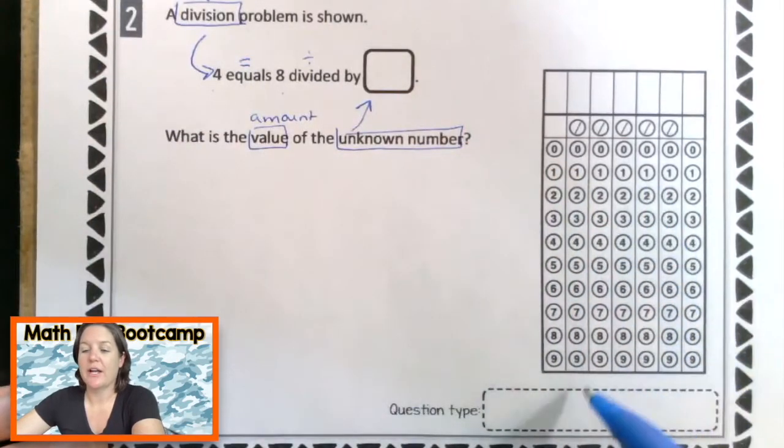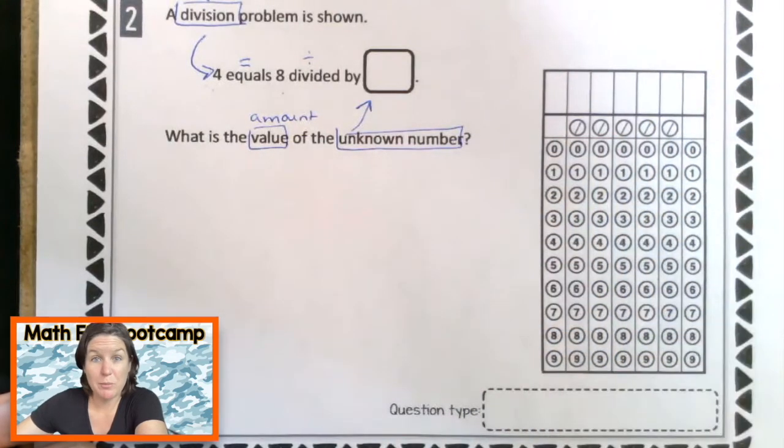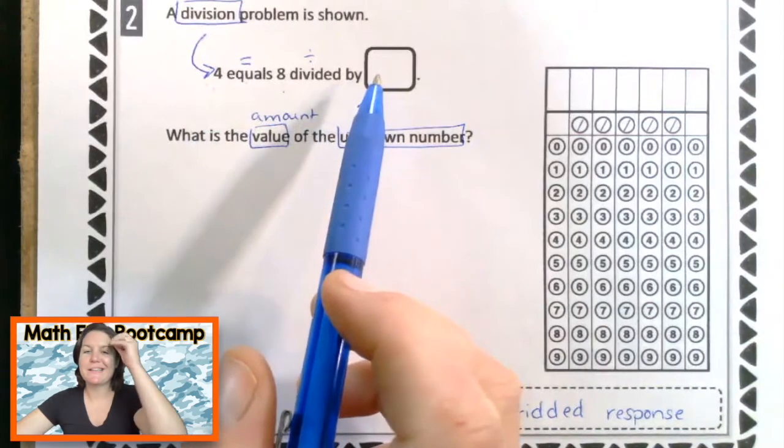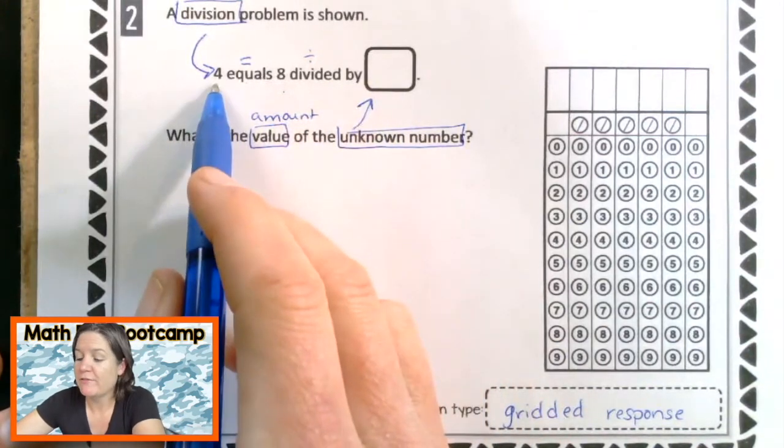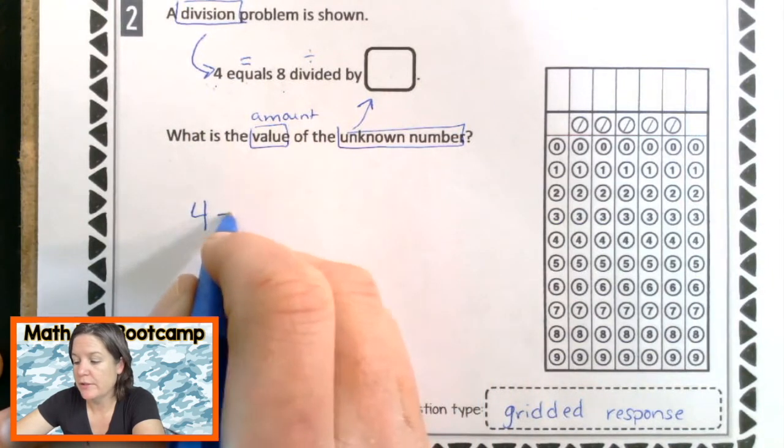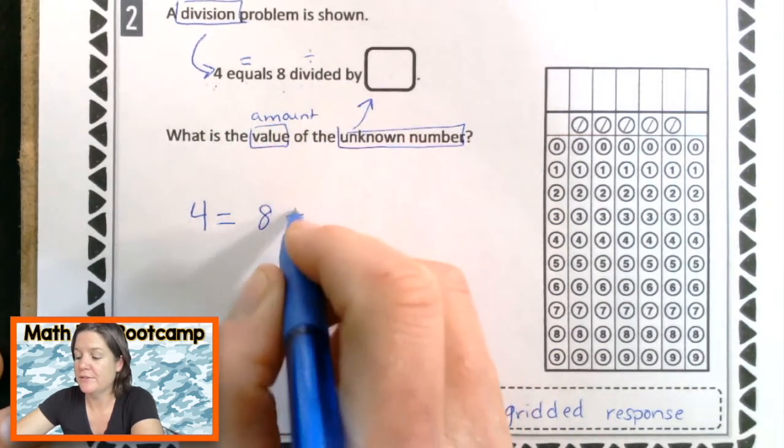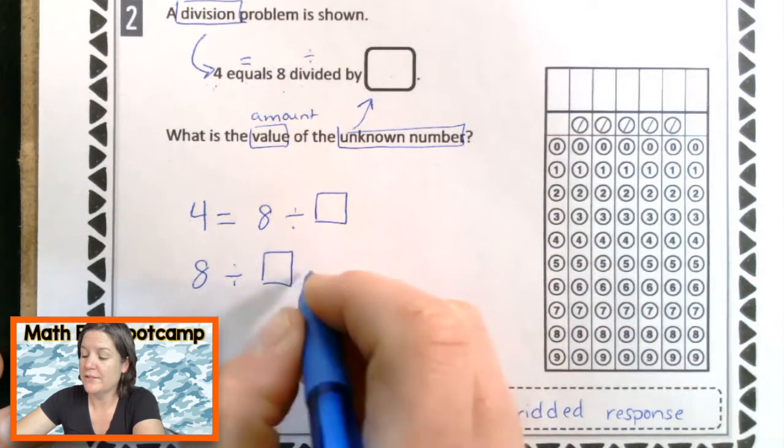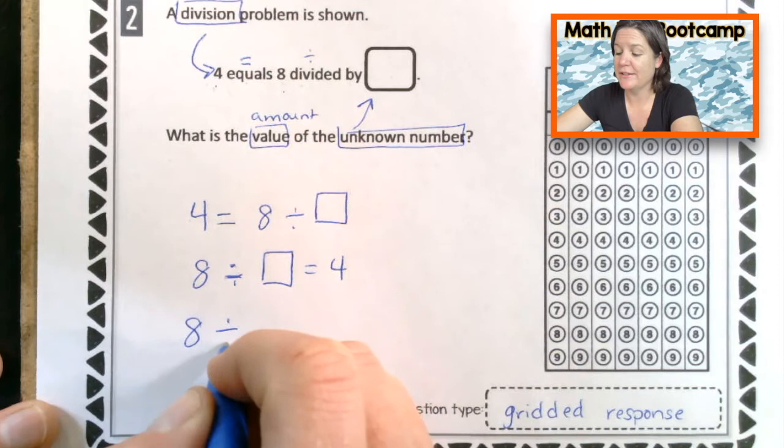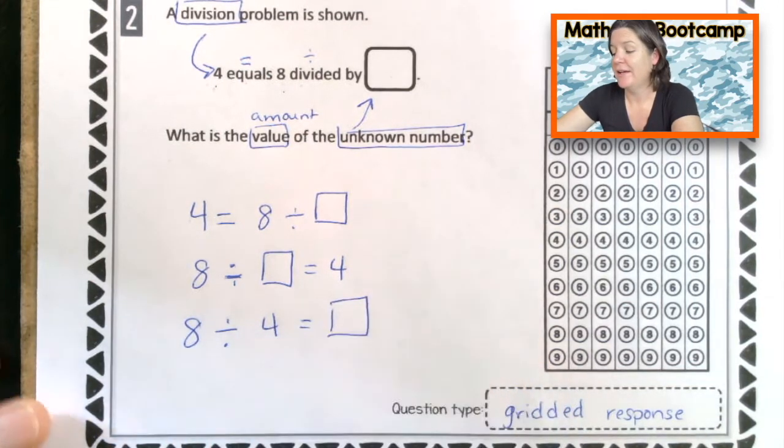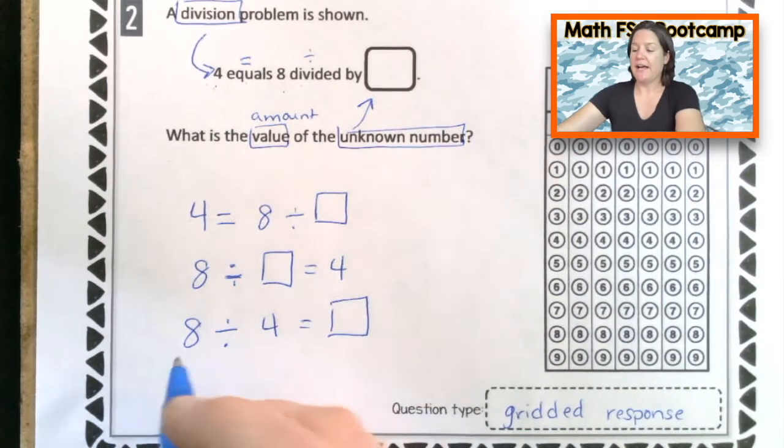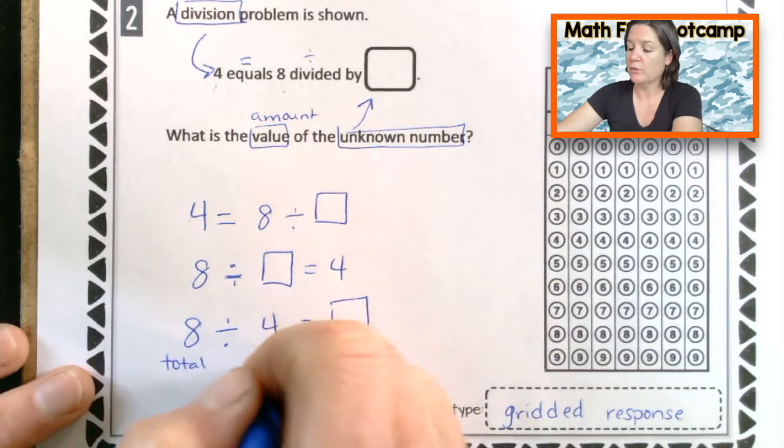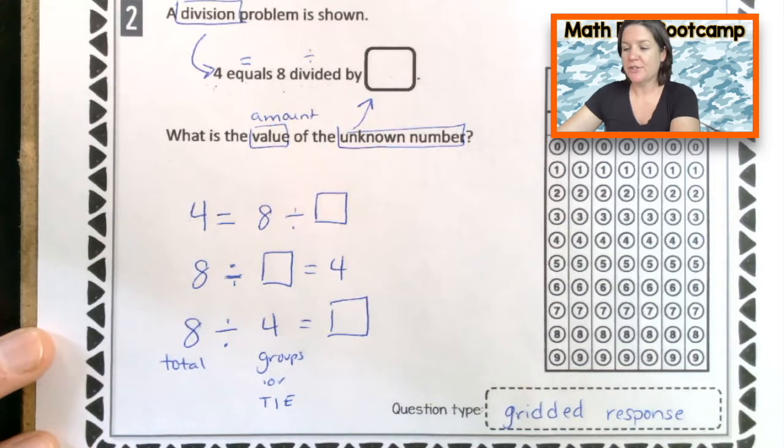Now this says 4 equals 8 divided by what? Hold up before we even get going. Let's talk about what kind of problem this is. I'm seeing a grid over here. So what type of problem is this? Yeah, it's a gridded response. So now this has words and numbers up there, but my brain, I like to think about it with numbers and symbols. So I'm going to rewrite what's up here. So we have 4 equals 8 divided by what? Another way that you could write this would be 8 divided by what equals 4, or even switch it around 8 divided by 4 equals what?